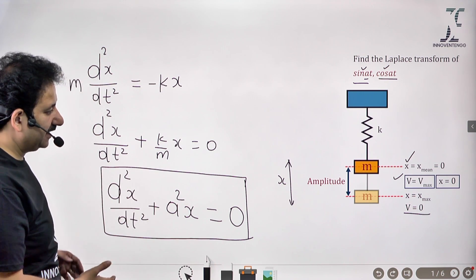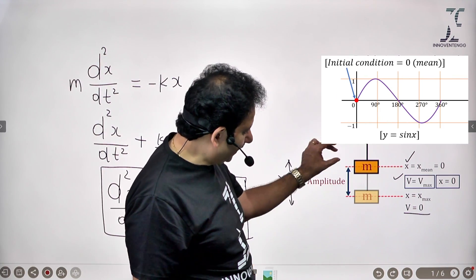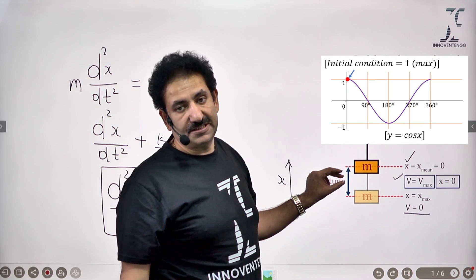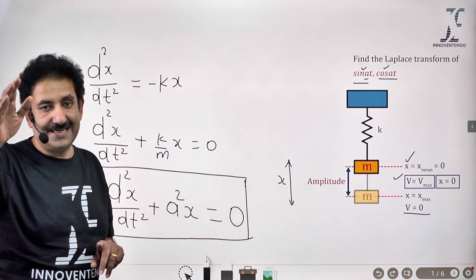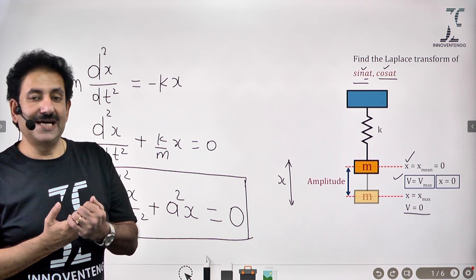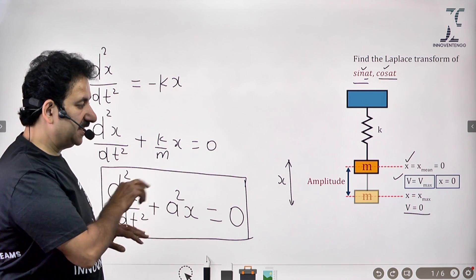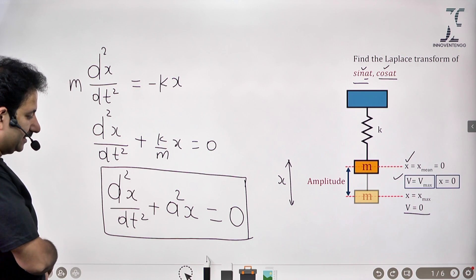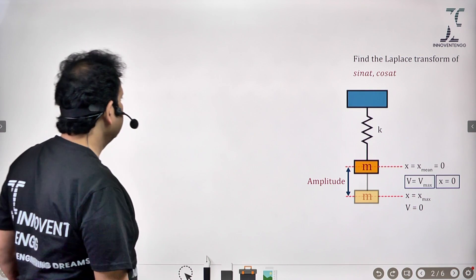How do you determine whether it is sine or cosine? It entirely depends on the boundary conditions. It is going to be sine if things incept from the mean position; it is going to be cosine if things incept from the extreme position. One advantage of this discussion is that you will get a very detailed idea of how to deal with differential equations using Laplace transform. Not only are you appreciating physically what is going on, but also you are learning how to deal with differential equations. Let's try and convert this into the Laplace transform algebraic equation.